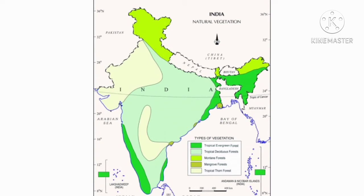Next one, thorn forest. Thorn forest can be seen in the northwest part of India, that means in Rajasthan and Gujarat, and in the south central part of India. This cream color indicates the thorn forest area.